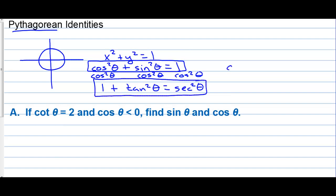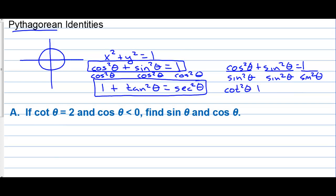Then if we take the original one — cosine squared theta plus sine squared theta equals one — and divide by sine squared theta, we get our third Pythagorean identity: cotangent squared theta plus one is equal to cosecant squared theta.